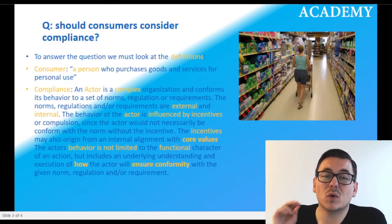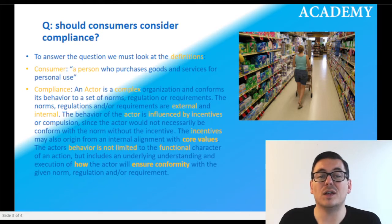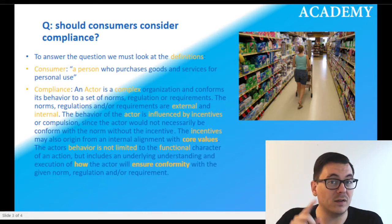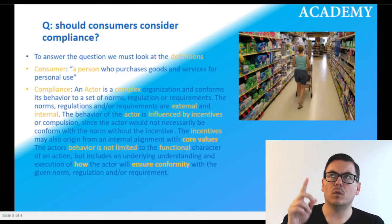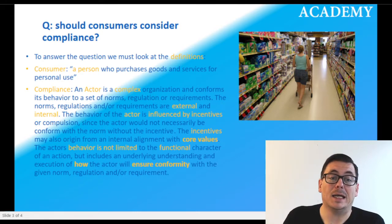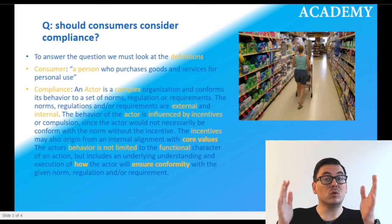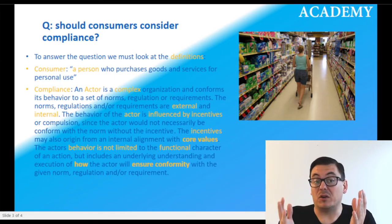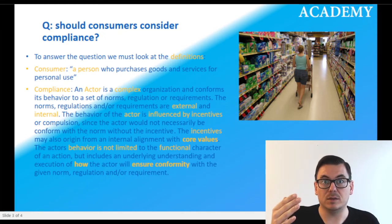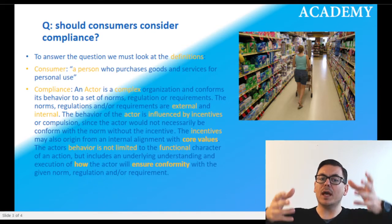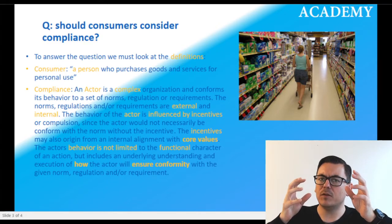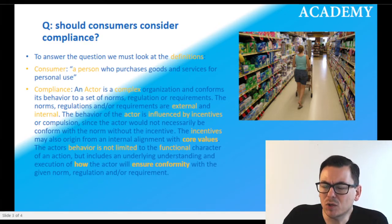The first part: an actor is a complex organization that conforms its behavior to a set of norms, regulations, or requirements. These norms, regulations, or requirements can be both external and internal. So can we say this equals a consumer? Well, a consumer is an actor — an actor behaving according to societal norms, their own norms, and there may also be regulation, such as not being allowed to pass a red light, and both external and internal requirements. In that sense, it fits pretty well.